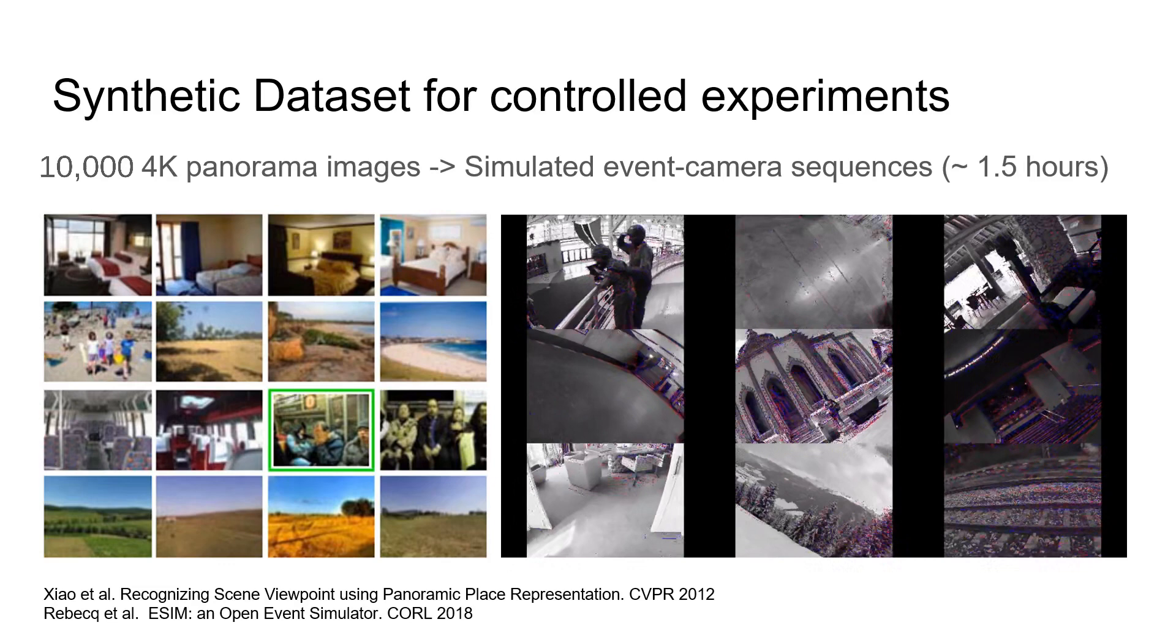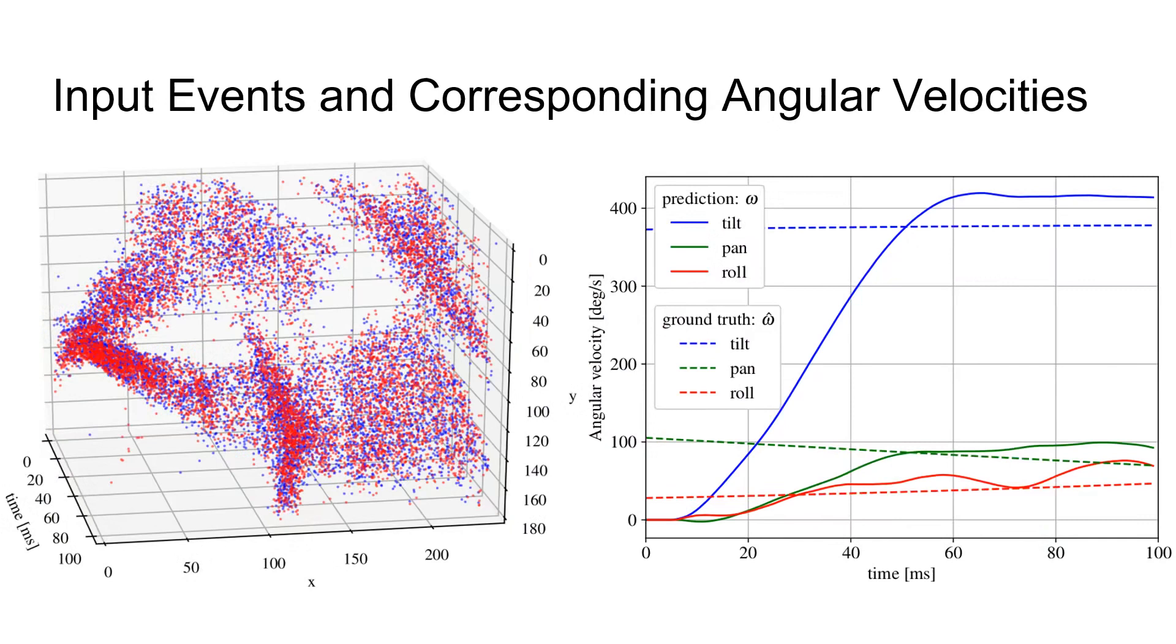This is done by feeding the SNN with short sequences of 100 milliseconds of events, as visualized on the left. We formulate a loss that is applied after 50 milliseconds to punish deviations of the inferred angular velocity from the ground truth. This can be seen in the plot on the right.